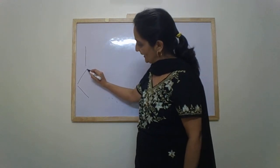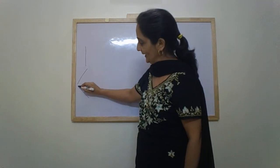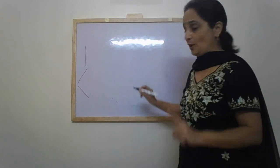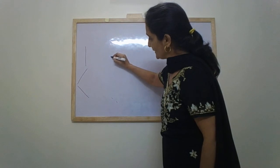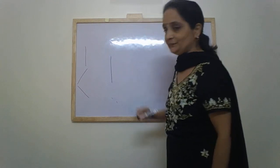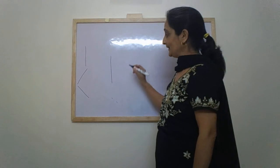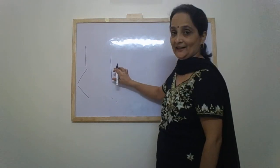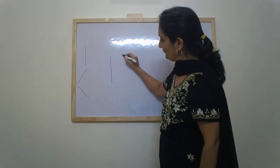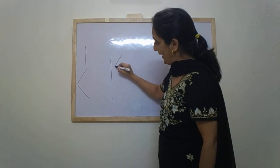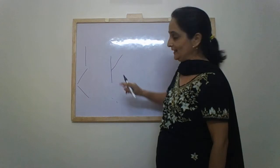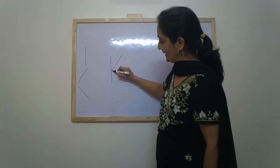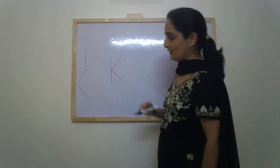One slanting line goes back and the other slanting line comes in the front. So, K is formed with the help of a standing line. A slanting line that goes back and touches the standing line. From little far, it will go back and touch the standing line. See, it touches it. And then another slanting line which comes in the front.